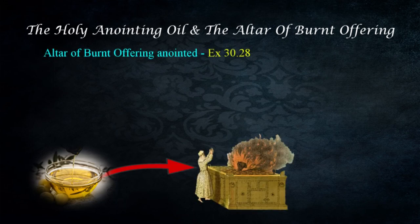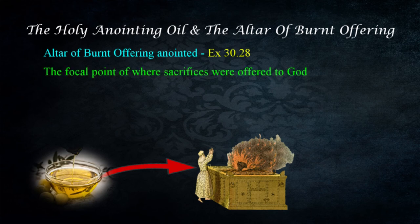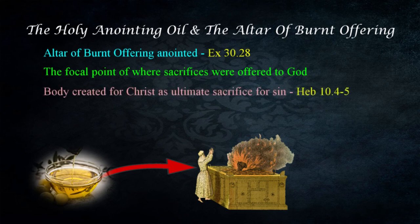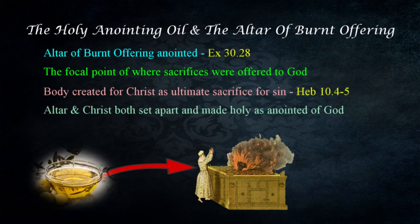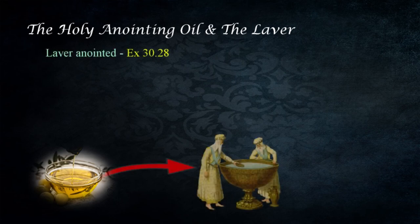The altar of burnt offering was also consecrated with the holy anointing oil in Exodus 30:28. This was the place where sacrifices were made in compliance with God's commands. Christ is the ultimate sacrifice for the sin of the world — a body was created to be offered, as stated in Hebrews 10:4–5. Christ was the only acceptable sacrifice that could remove sin completely. He was set apart by God himself for this purpose, and just as the altar was consecrated and made holy, so was Christ, the anointed of God.